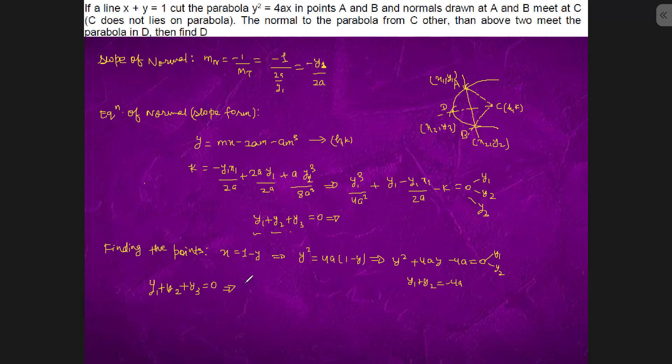So y1 plus y2 plus y3 is 0, and from here we get y3 equals to 4a. So if y3 is equal to 4a, x3 will come out to be 4a. So the points are (4a, 4a). This is the simple logic for example.